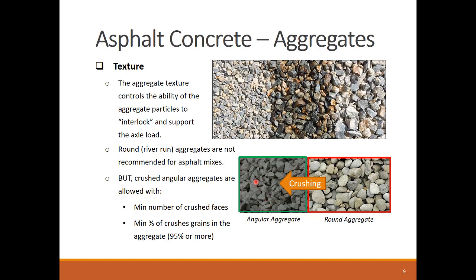Texture is a very important aggregate factor, especially in asphalt concrete, as it determines the level of interlocking between the aggregate particles, which in turn defines the mix strength. Round river-run aggregates are not recommended for asphalt mixes, but they can be crushed to create angular aggregates that can be used in asphalt mixes, following specific requirements about the minimum number of crushed grain faces and their percentages in the aggregate.